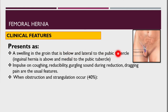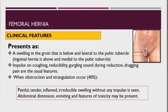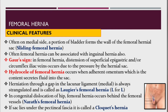This is the key difference between femoral hernia and inguinal hernia: inguinal hernia is above and medial to the pubic tubercle. Impulse on coughing, reducibility, gurgling sound during reduction, and dragging pain are the usual features. When obstruction and strangulation occur — in 40% of cases — it will present as a painful, tender, inflamed, irreducible swelling without any impulse. Abdominal distension, vomiting, and features of toxicity may also be present.